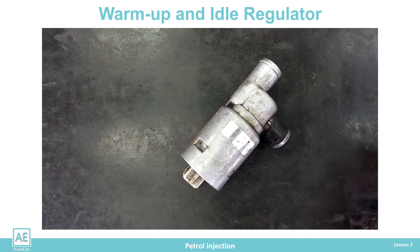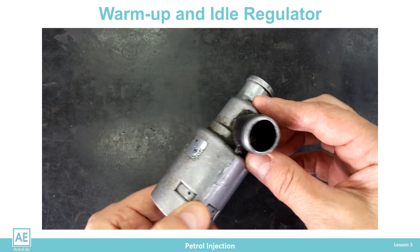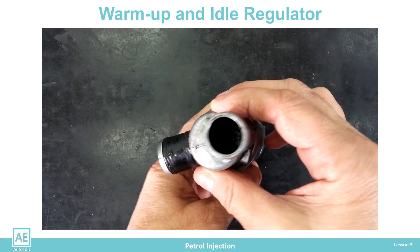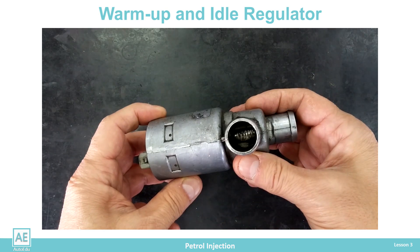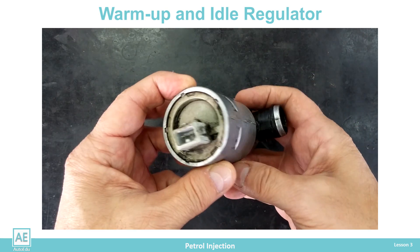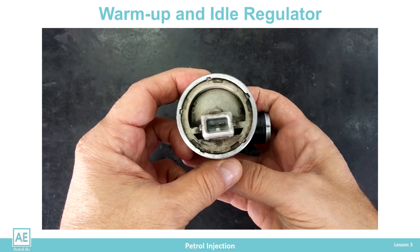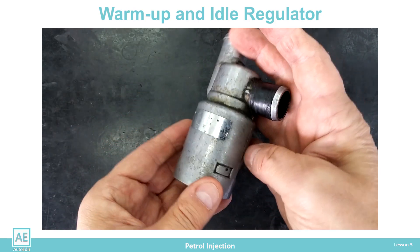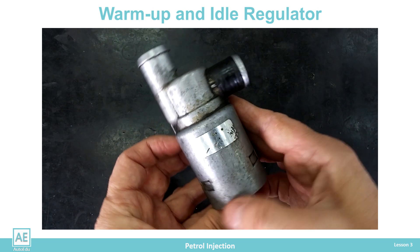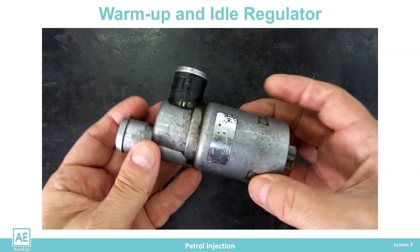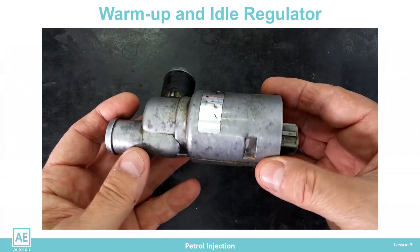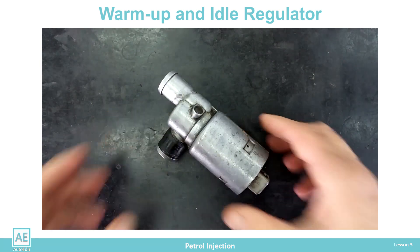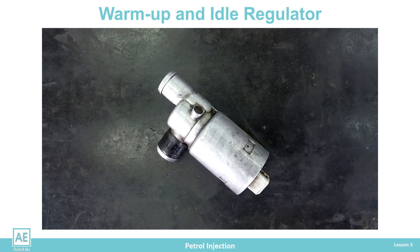That is why a regulator with a single coil was developed, which is responsible for opening the valve, while a spring is used to close it. When the winding fails, the spring closes the flap, and the engine only has a problem in the heating mode, which is much more favorable than the opposite malfunction.